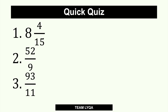Alright, let's see how you did. Let's start with the first one. This is a mixed number, so we're going to turn it into an improper fraction. Take the whole number and multiply by the number on the bottom. So we have 8 times 15, which gives us 120, plus 4 — so 124 over 15.